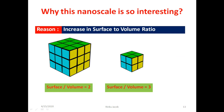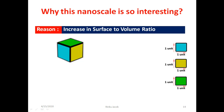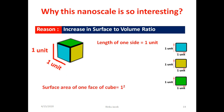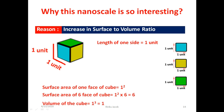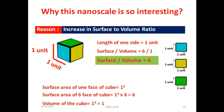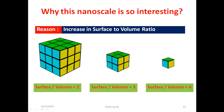We again reduce the size to the basic unit cell with side 1 unit. Surface area of one face = 1² = 1, total surface area = 1×6 = 6 unit square. Volume = 1³ = 1 unit cube. Surface to volume ratio = 6/1 = 6. As we reduce the size to that of a basic unit cell, the surface to volume ratio increases from 3 to 6, proving that reducing bulk material size increases the surface to volume ratio.